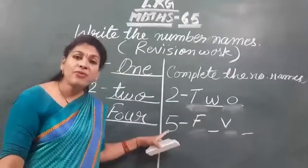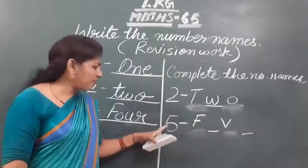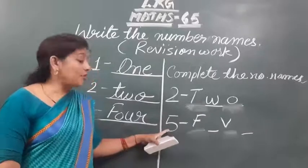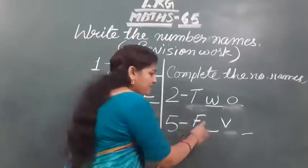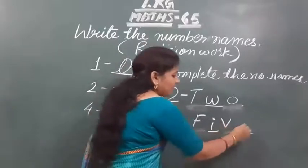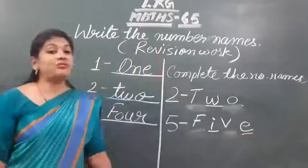It is number five. Then how to write five? Five you know how to write. But what do you have to do? You have to complete this. F-I-V-E, five. Just like that.